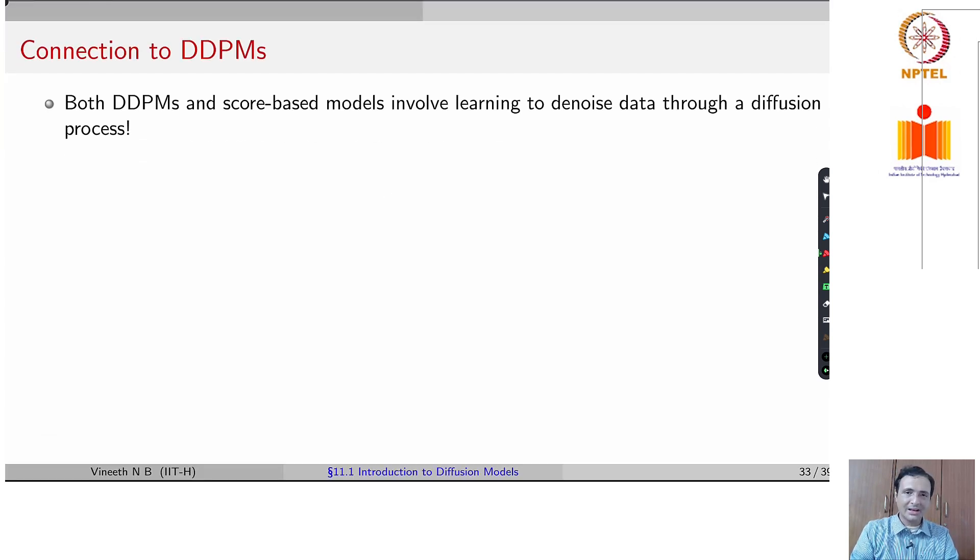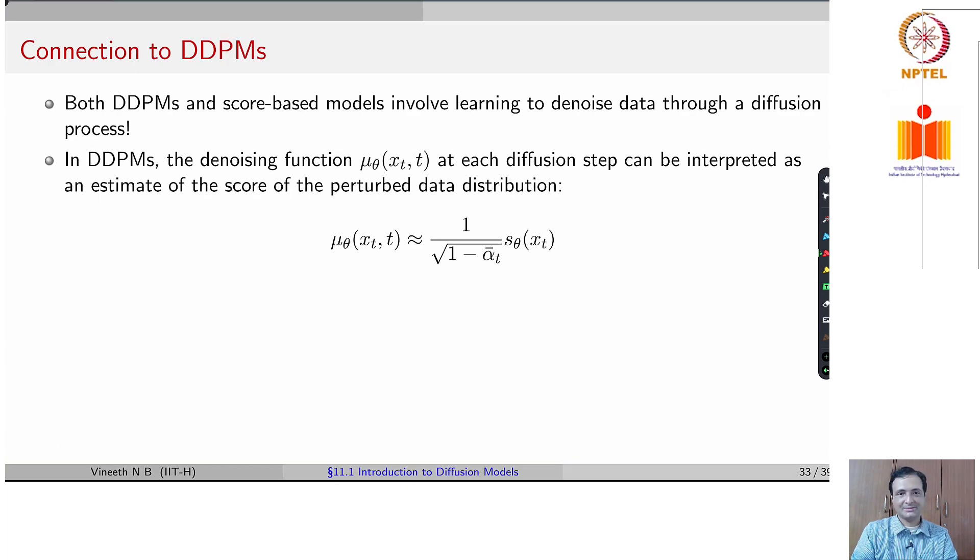Now, how is this connected to DDPMs? Both DDPMs and score based models try to denoise data through a diffusion process. In DDPMs, the denoising function mu theta which we saw a few slides ago at each diffusion step can be interpreted as a scoring function of the perturbed data distribution of that noisy distribution at that time step. You could say that your mu theta at every time step of reverse process is trying to give a score of how well you captured the equivalent forward process distribution at that particular time step.